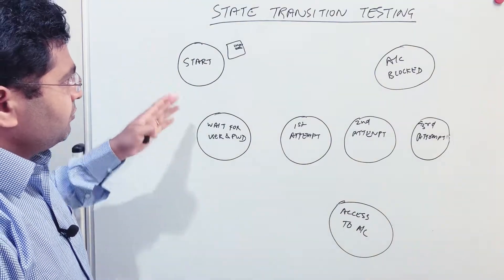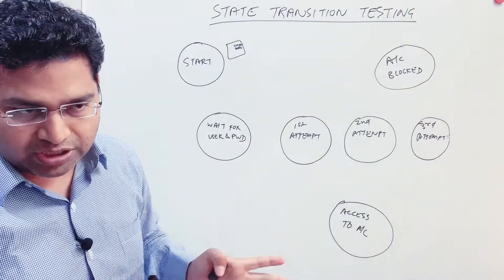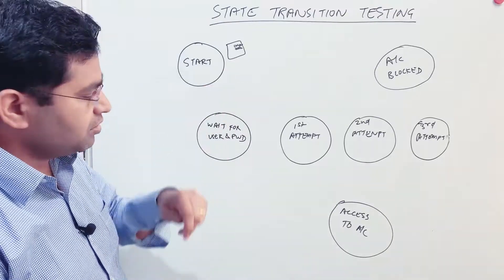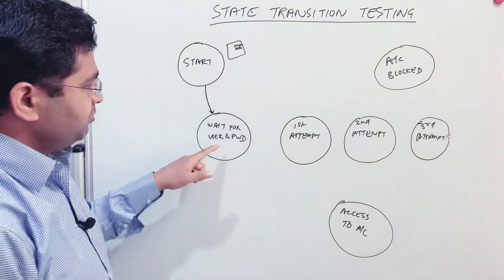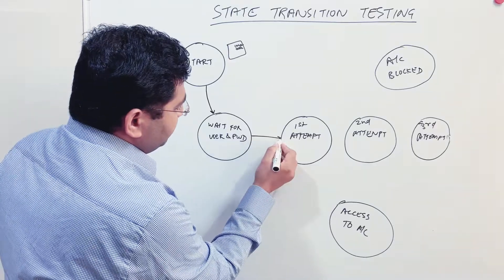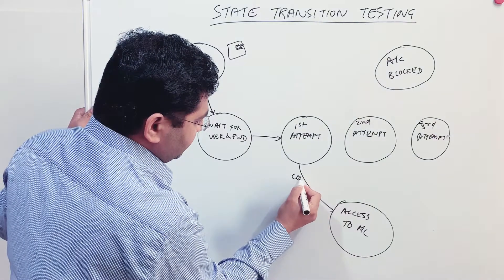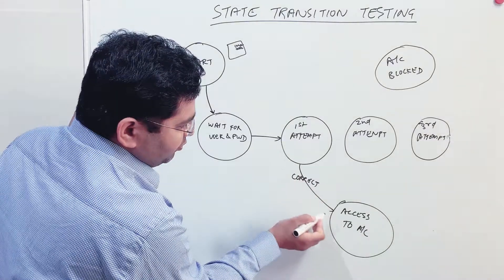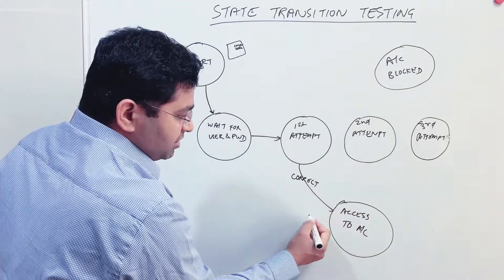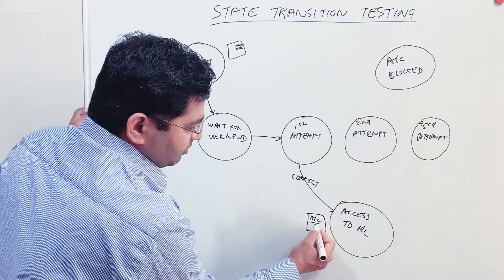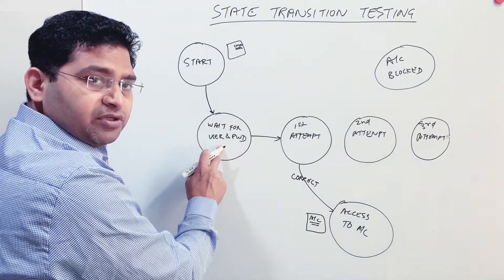Now let's talk about the transitions. Once the user clicks on the login button, they are moved to the 'wait for username and password' state. In the first attempt, if the user enters the correct username and password, they will be moved to 'access to account' — the application state changes and they are redirected to the account page on the banking application.